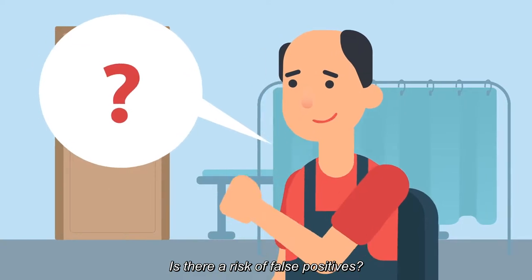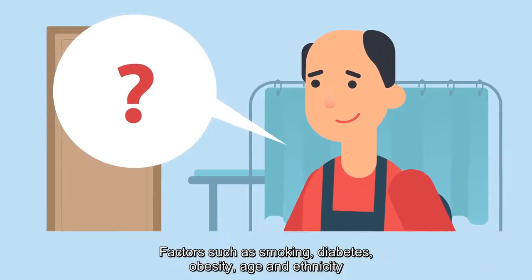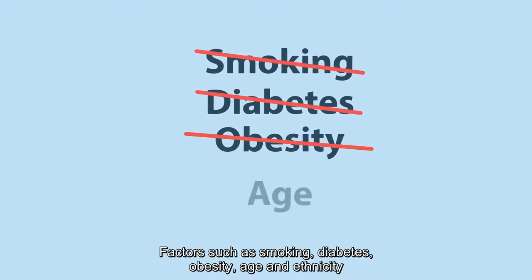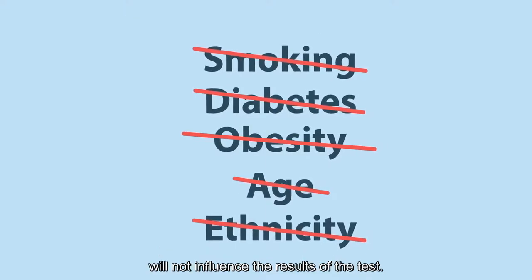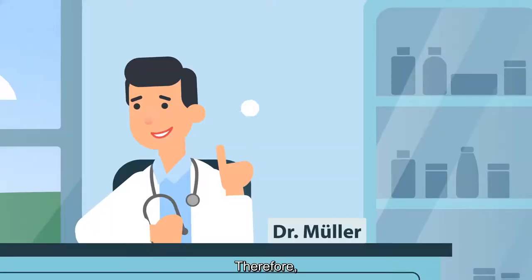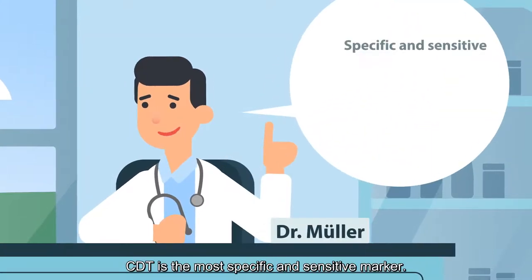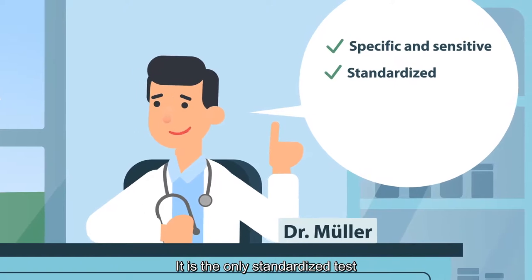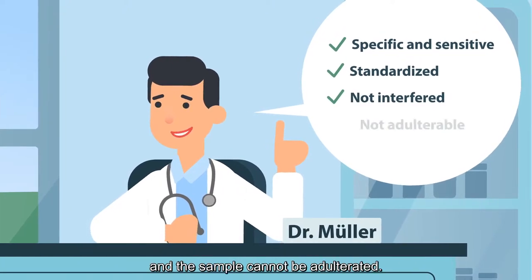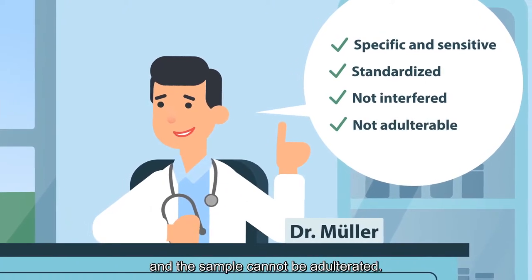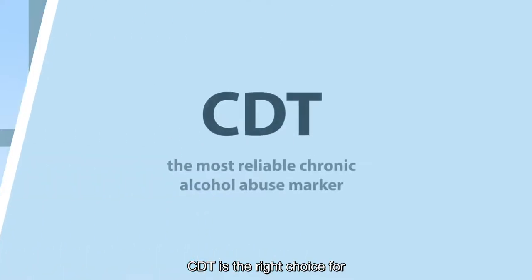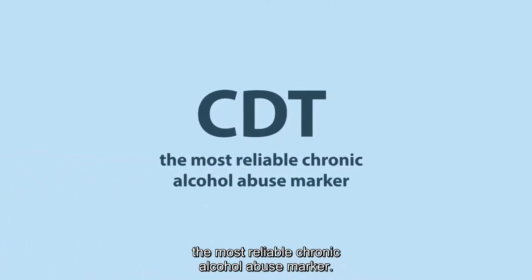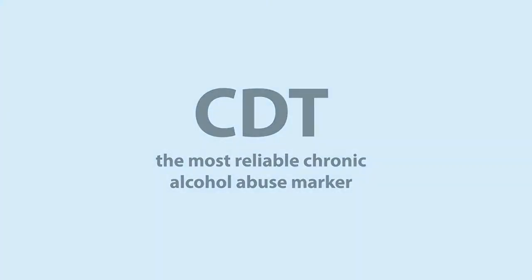Is there a risk of false positives? No. Factors such as smoking, diabetes, obesity, age and ethnicity will not influence the results of the test. Therefore, CDT is the most specific and sensitive marker. It's the only standardised test that doesn't have interferences and the sample cannot be adulterated. CDT is the right choice for the most reliable chronic alcohol abuse marker.